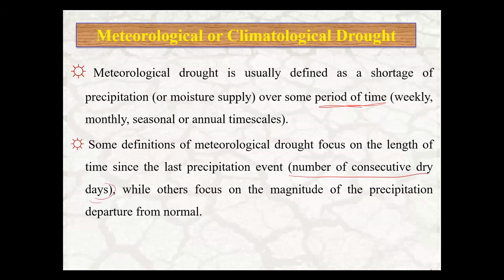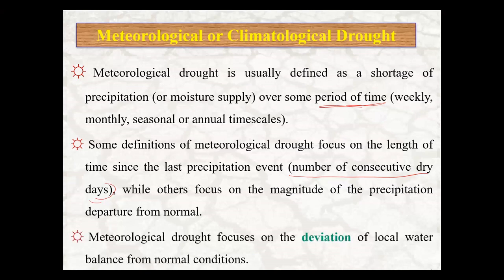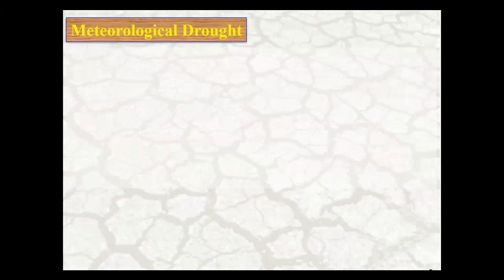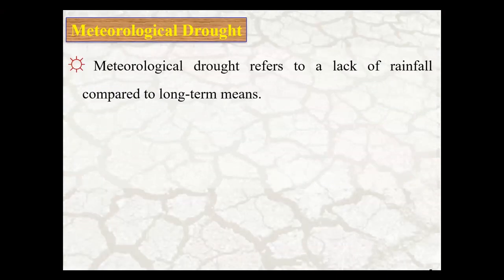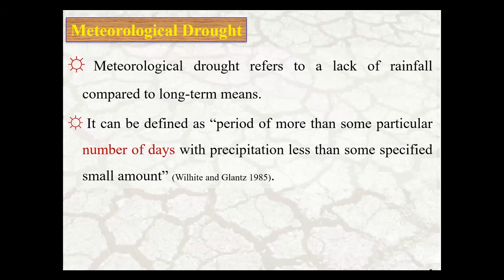Some definitions focus on the number of consecutive dry days, while others focus on the magnitude of the precipitation departure from normal. Meteorological drought also focuses on the deviation of local water balance from normal conditions. Another definition refers to a lack of rainfall compared to long-term means, or a period of more than some number of days with precipitation less than a specified small amount.